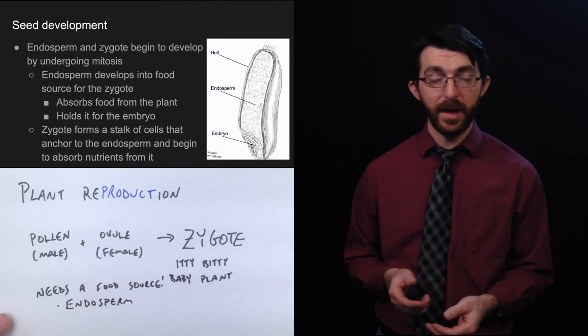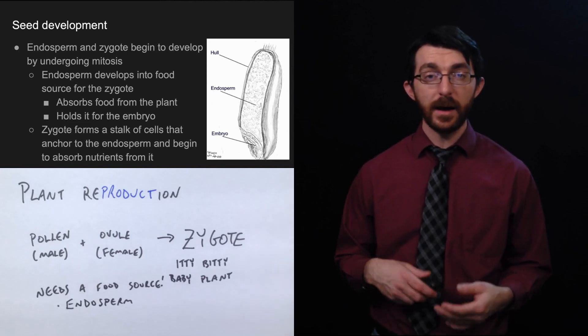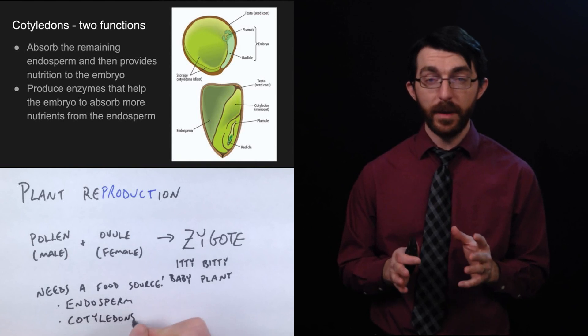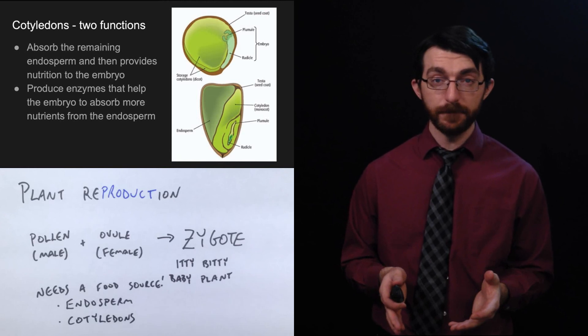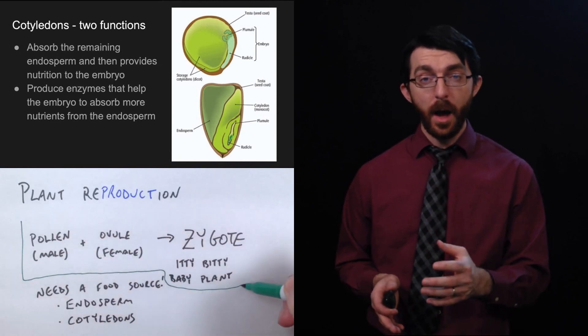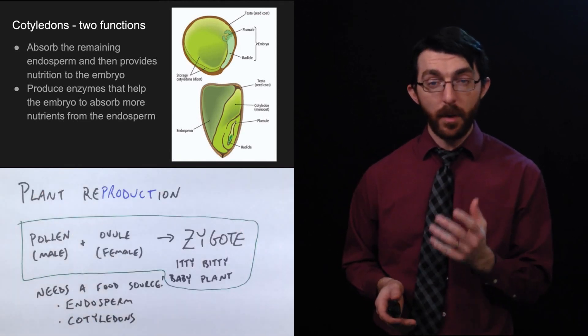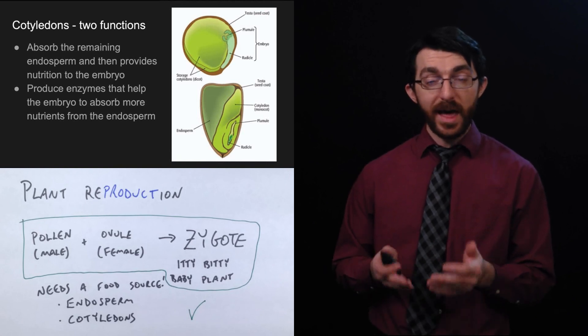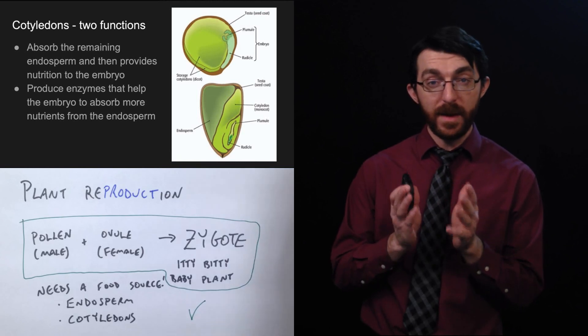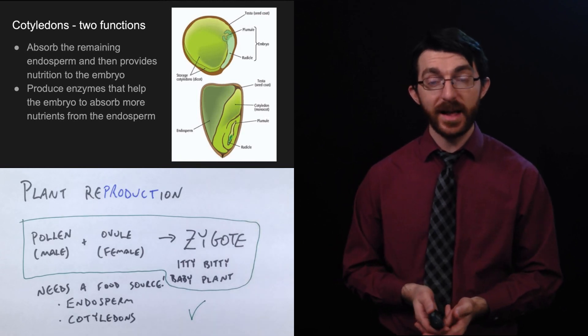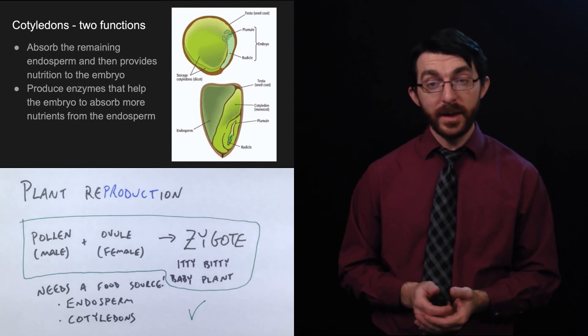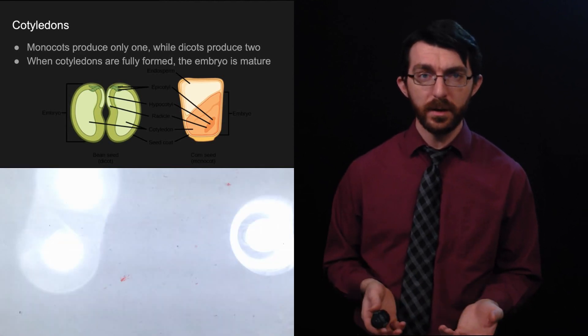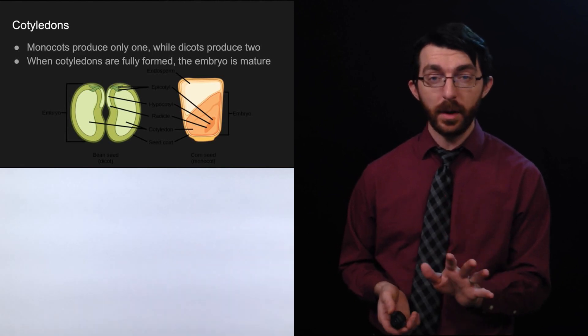The endosperm is more of the product of the reproductive cycle. It's not the zygote. It's kind of like a side job that the reproductive organs do. And this gets absorbed into the cotyledons. So cotyledons absorb the remaining endosperm, and then it provides nutrition to the embryo. They also produce enzymes that help the embryo to absorb more nutrients from the endosperm. So when you eat a seed, here pictured is a pea and a kernel of corn. When you eat those, the part that you are getting your nutrition from are the cotyledons. And the reason that they are so packed with energy and nutrition is because that was packaged in there, stored for the baby plant, the plant embryo that is inside that seed. So when you're eating vegetables, you're eating the lunch that the plant's mommy packed for its baby. You monster. More about cotyledons. You know that monocots produce only one, dicots produce two. And when the cotyledons are fully formed, the embryo is mature.